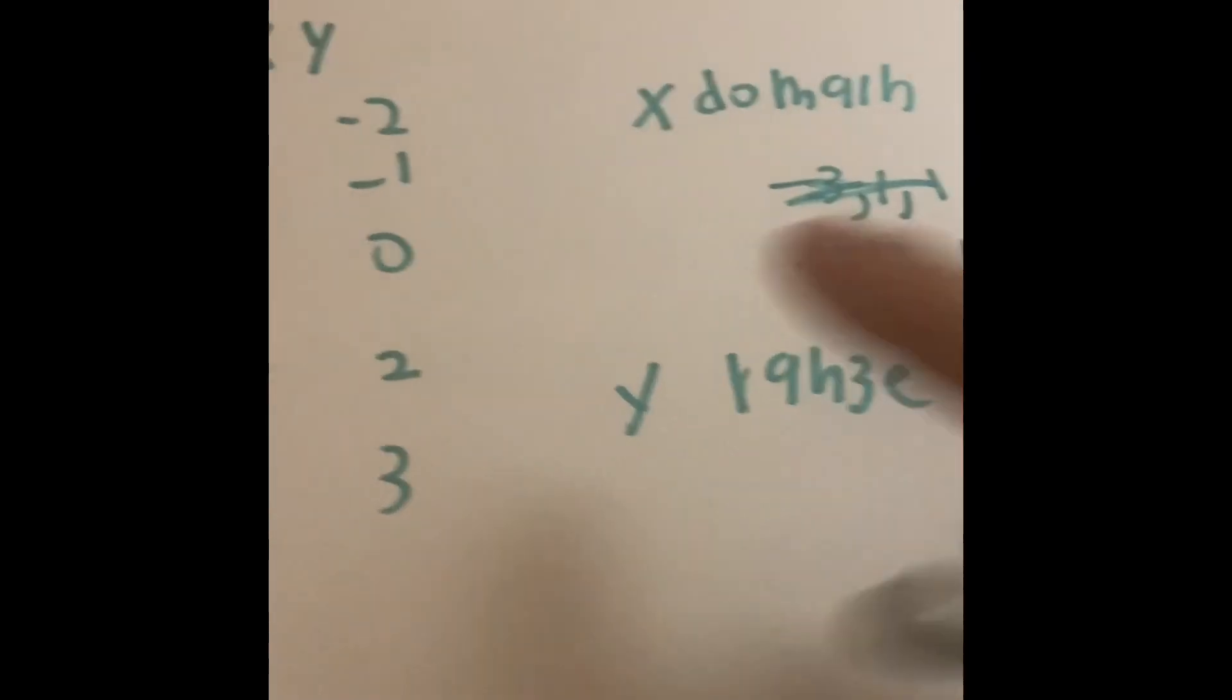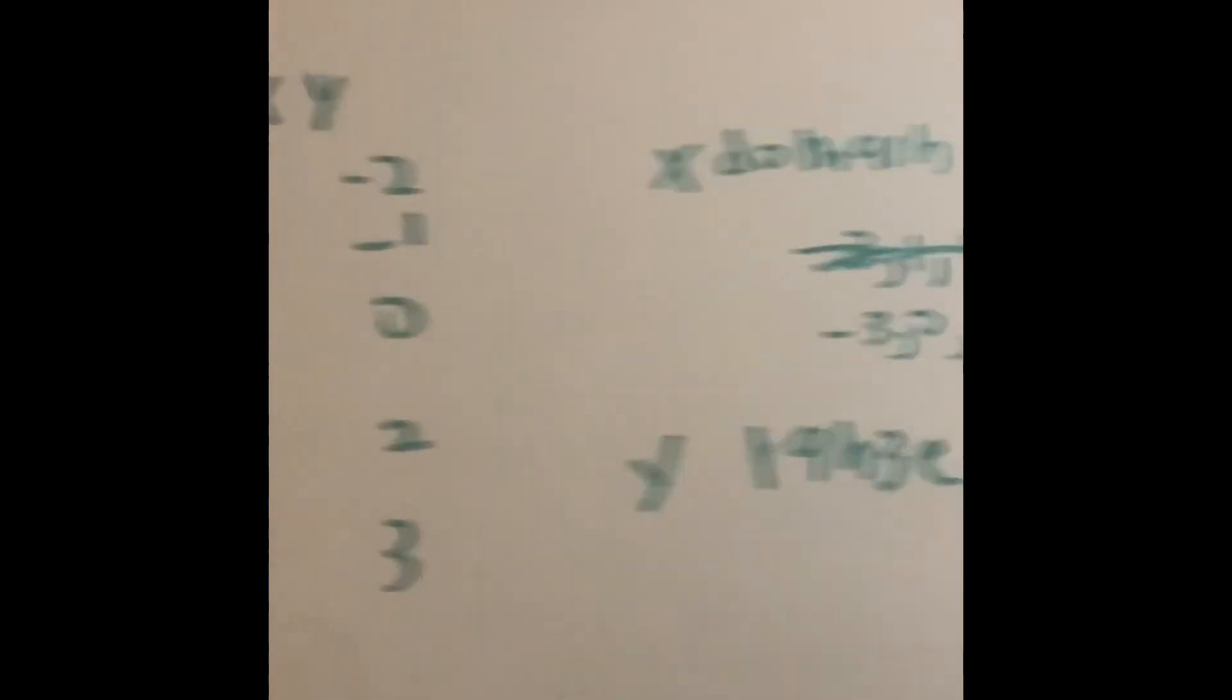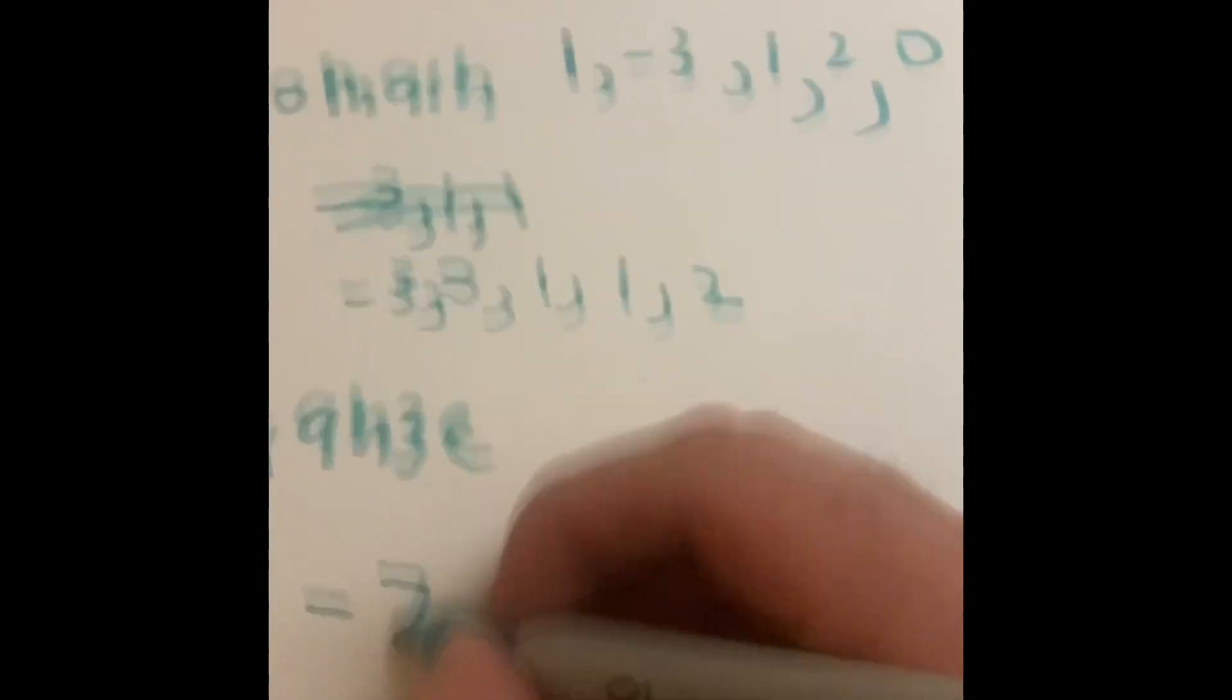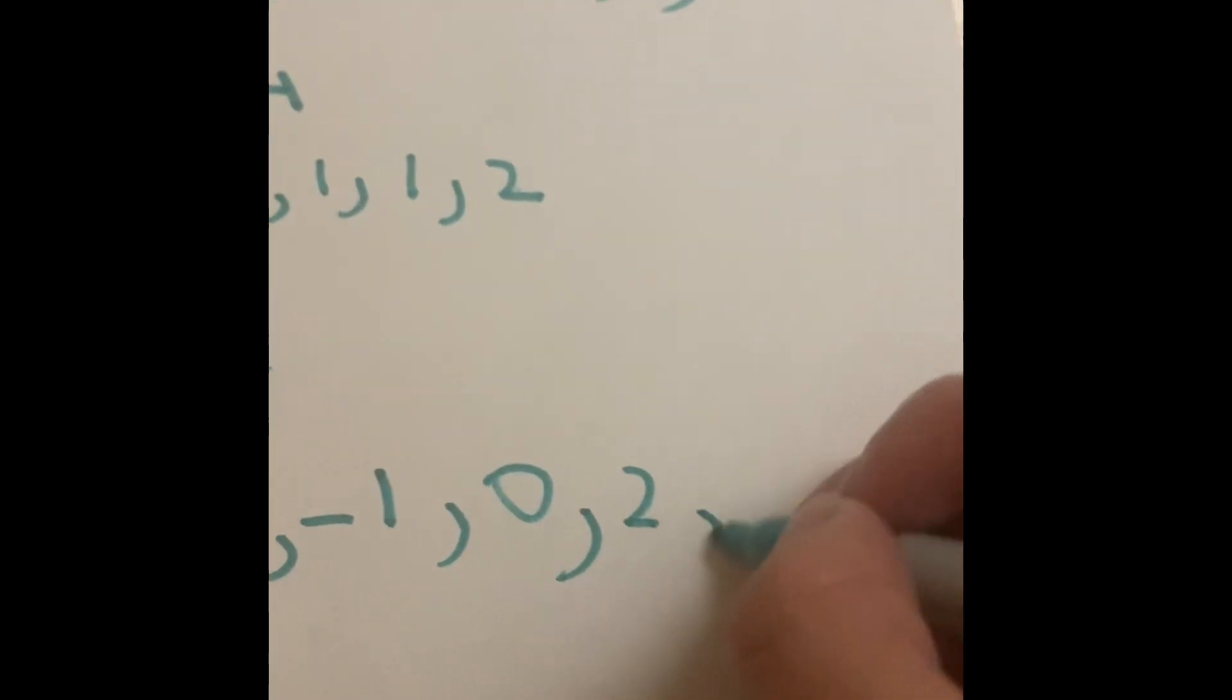For the range, luckily for us, it's going to be in order exactly. So for the range, we have negative 2, negative 1, 0, 2, and 3.